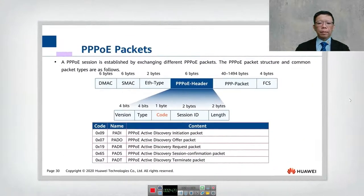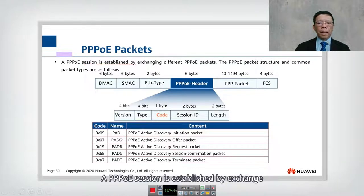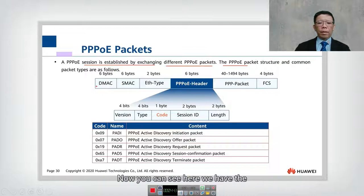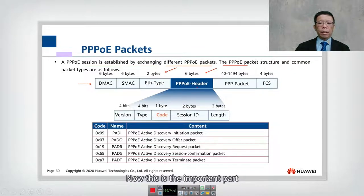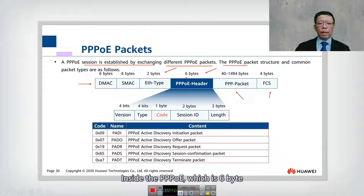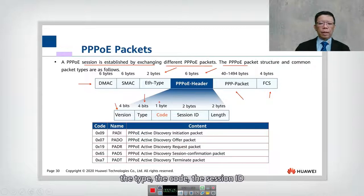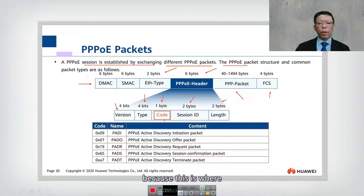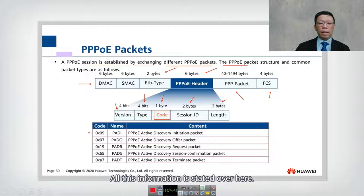A PPPoE session is established by exchanging different PPPoE packets. The PPPoE packet structure includes: destination MAC, source MAC, internet type, and the PPPoE header. The PPPoE header is six bytes and contains a four-bit version field, a type field, a code field, a session ID, and a length field. The code field is particularly important because this is where PPPoE session negotiation takes place.